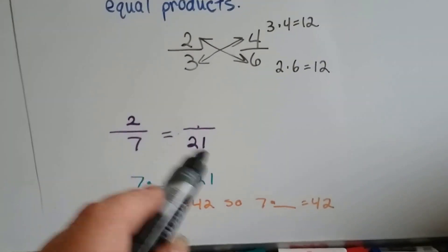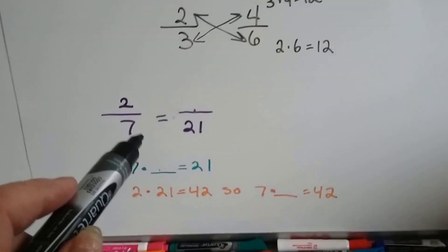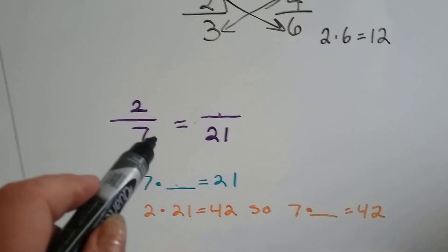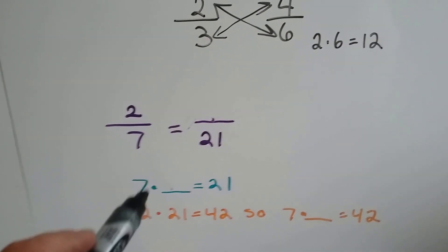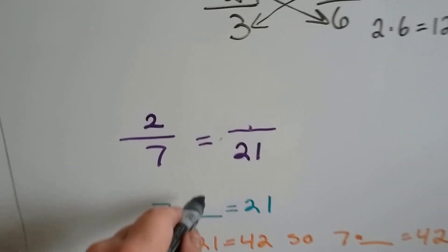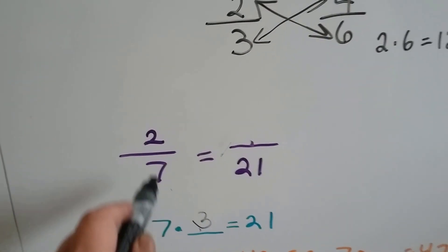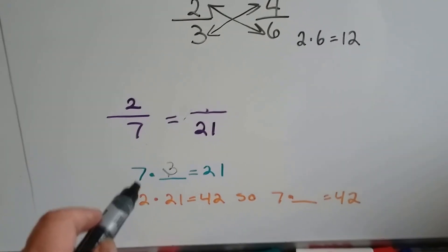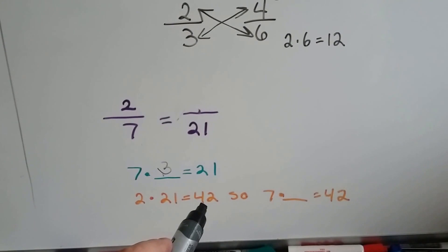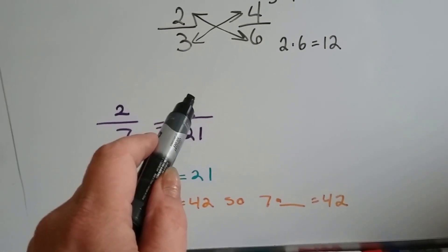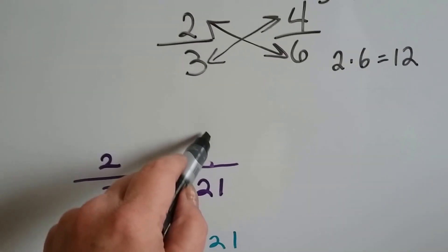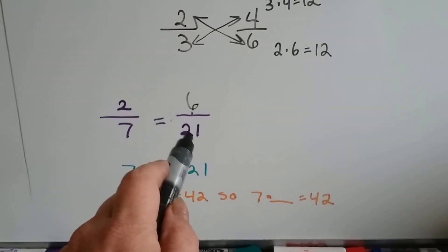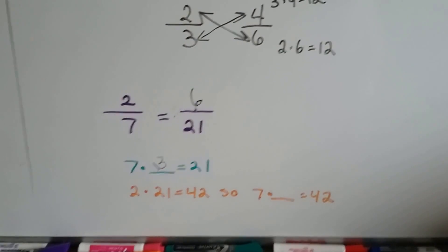Sometimes it's too hard to multiply the means and extremes because the numbers are just getting too big. Sometimes it's better to just find a common denominator. What does seven need to become twenty-one? Well, seven times three is twenty-one. That means two is going to be multiplied by three, and then that would be six. We could also do two times twenty-one is forty-two. So what does seven need to be forty-two? It needs a six. So either way we're going to get six, but if the denominator is too big on one of them, you can just do the common denominator way.